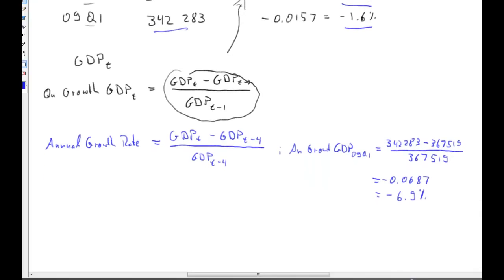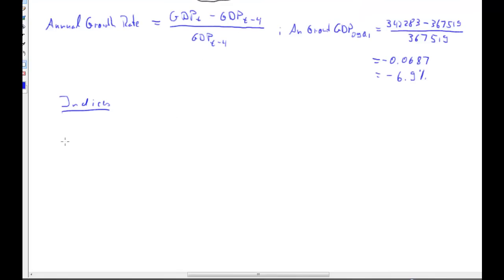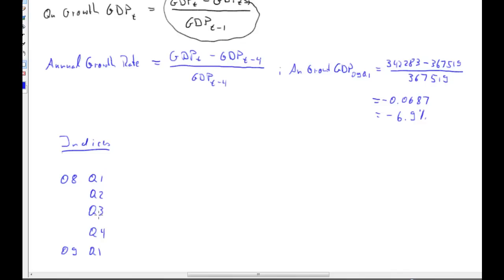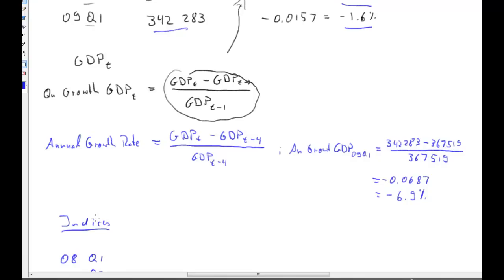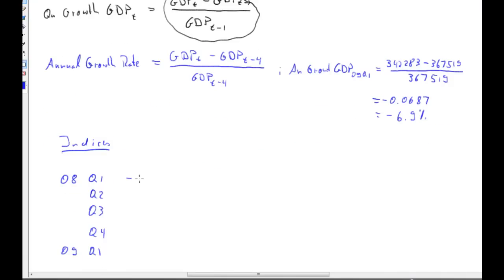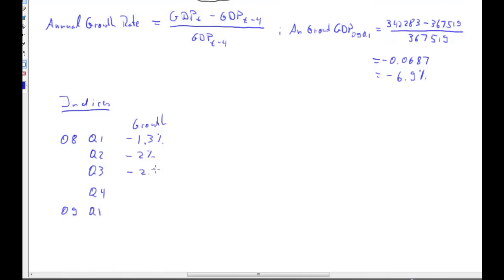Now, I want to say something about indices. Indices. Because they are quite common. Often, you can see time series as indices. And I want to just give myself the same periods. And I will copy the quarterly growth rate. So, we have negative 1.3%, negative 2%, negative 2.3% and negative 1.6%.